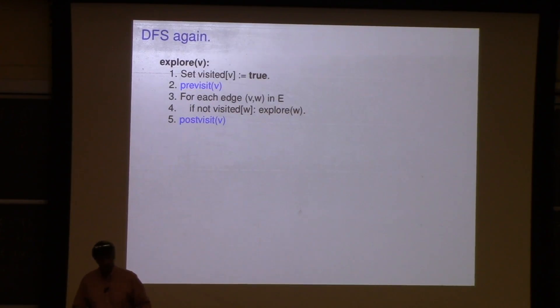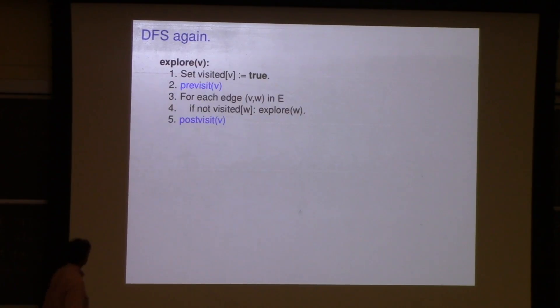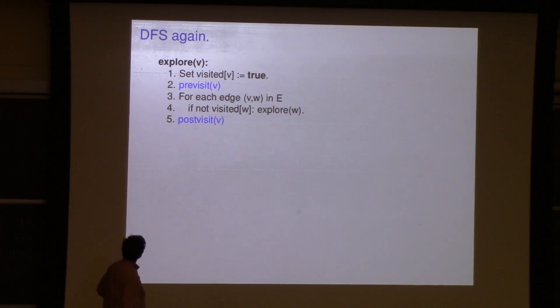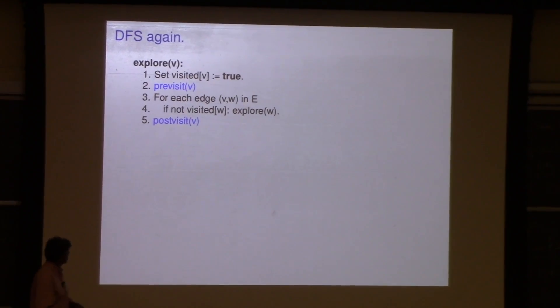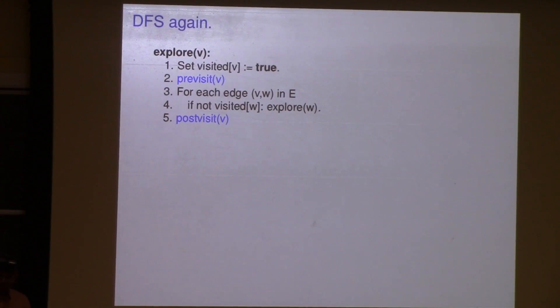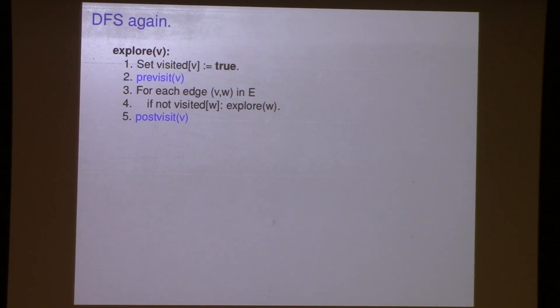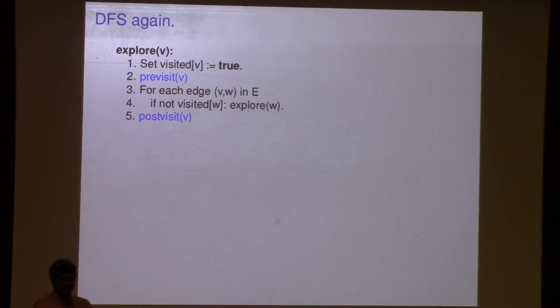We saw a depth-first search. So this is explore, this recursive procedure, you see the recursive call, does everybody see the recursive call there? What's the data structure that's associated with the recursive procedure? A stack. So there's a stack somewhere here. We didn't really have to write it with recursion, we could have done it explicitly with the stack.